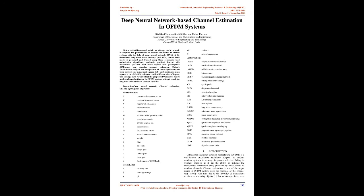Performance analysis and comparison of these algorithms has been carried out using least square (LS) and minimum mean square error (MMSE) estimators with different input sizes. The findings revealed that the proposed DNN model can be used as a channel estimator in OFDM systems without requiring any prior information of channel statistics. Keywords: Deep Neural Network, Channel Estimation, OFDM, Optimization Algorithms.